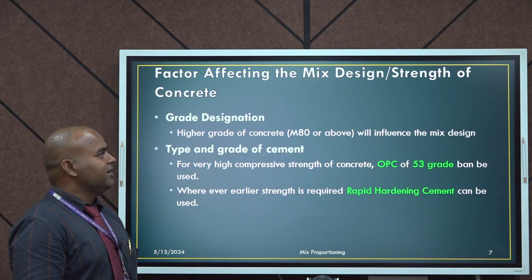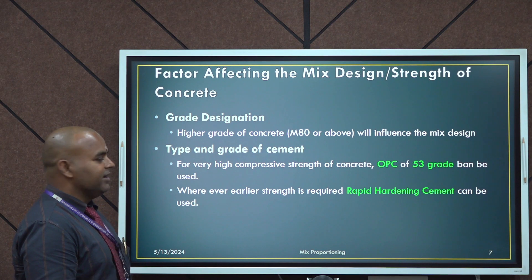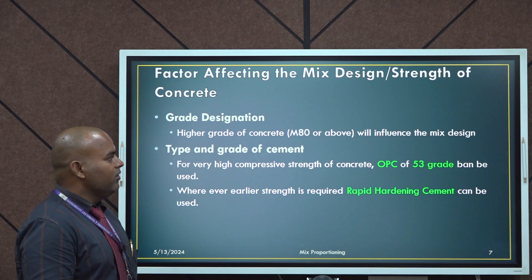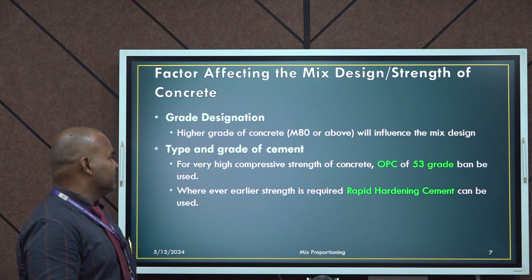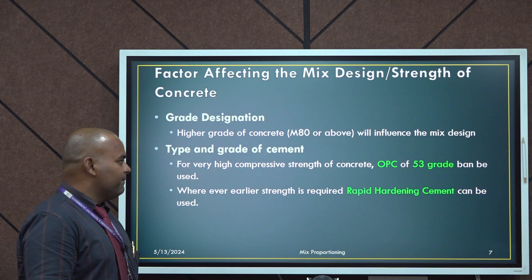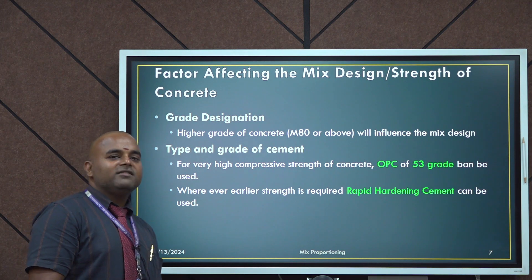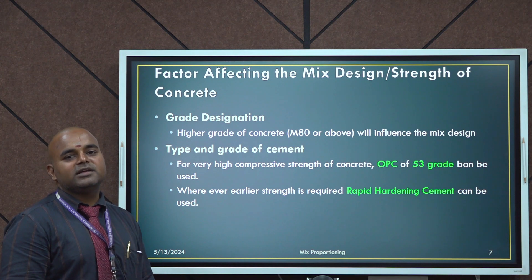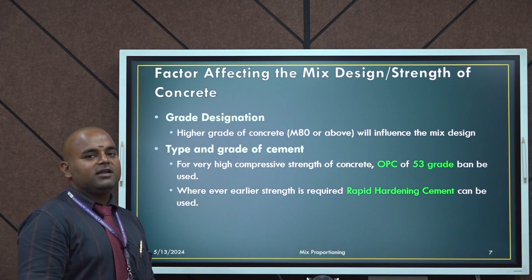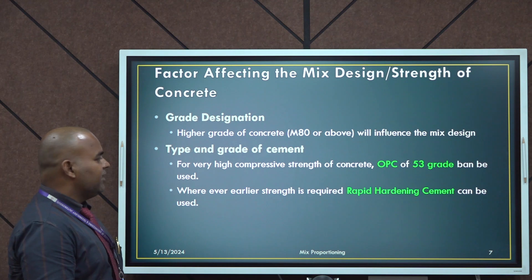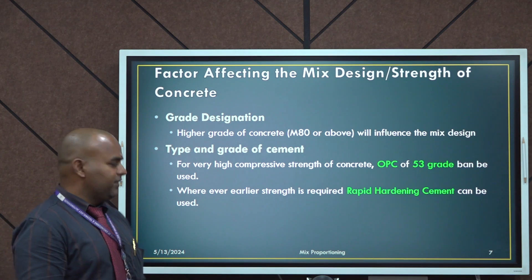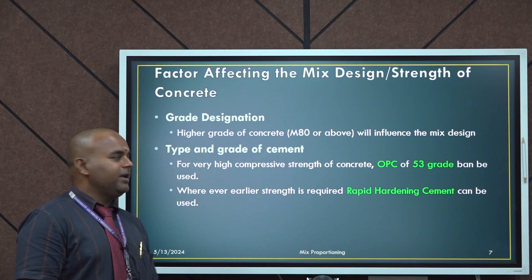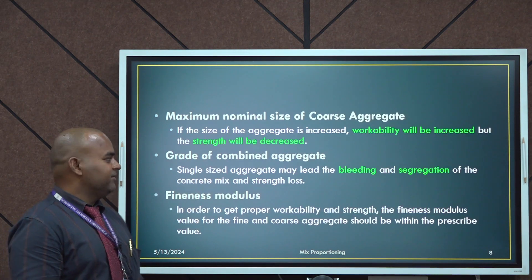Factors affecting the mix design are: strength of the concrete and grade designation — higher grade of concrete M80 or above will influence the mix design. Type and grade of cement: for very high compressive strength of concrete, OPC of 53 grade can be used. In OPC there are three grades available — 33, 43, and 53. For high grade concrete we can go for 53 grade of cement. Wherever earlier strength is required, rapid hardening cement can be used instead of OPC.